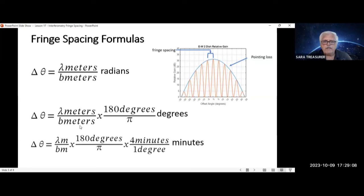To convert the radians to degrees, you multiply that answer by 180 degrees over pi. And when you're drift scanning, to figure out how many minutes between each of these peak fringes, you multiply that answer in degrees times four minutes per one degree, and that will give you the answer in minutes. Note that the four minutes over one degree is how fast the earth rotates during a drift scan.